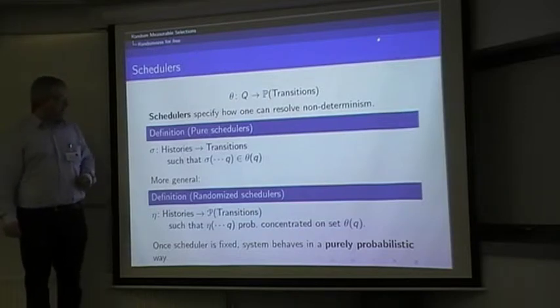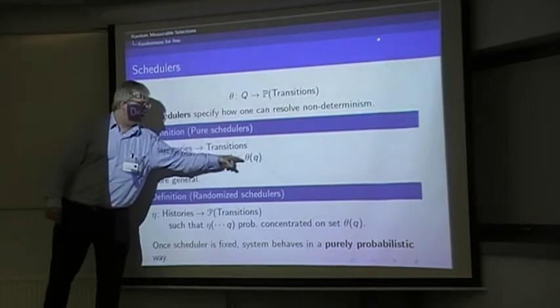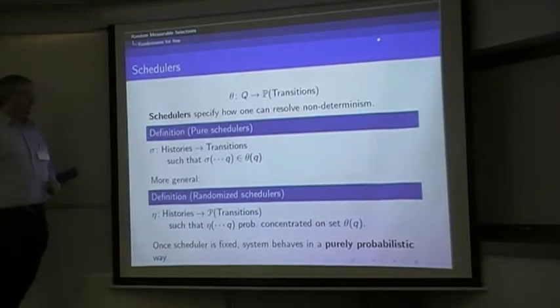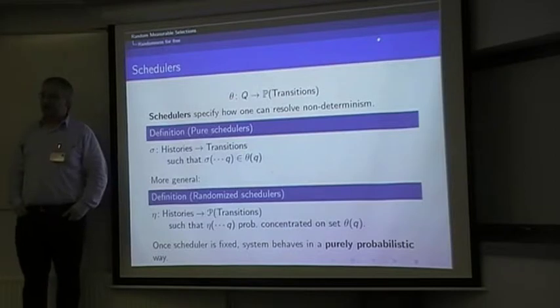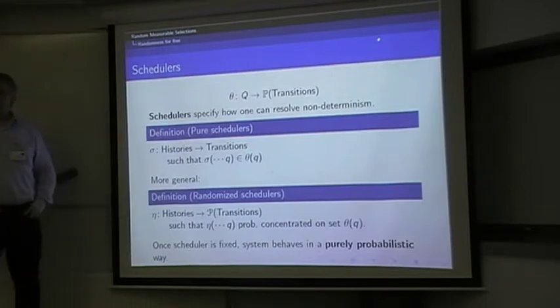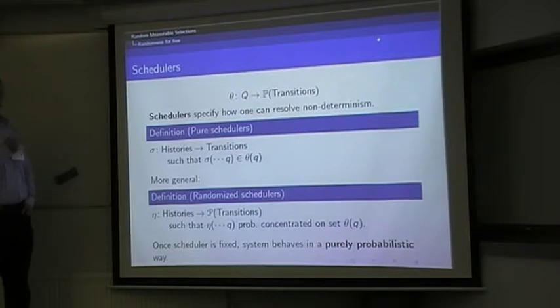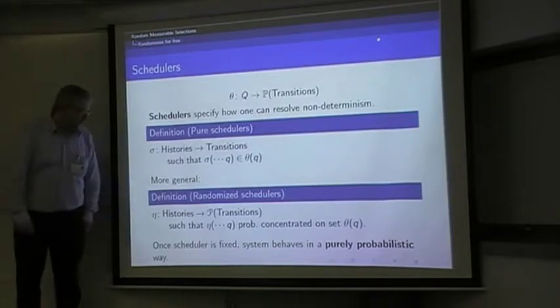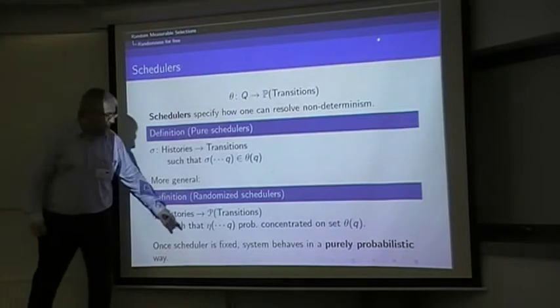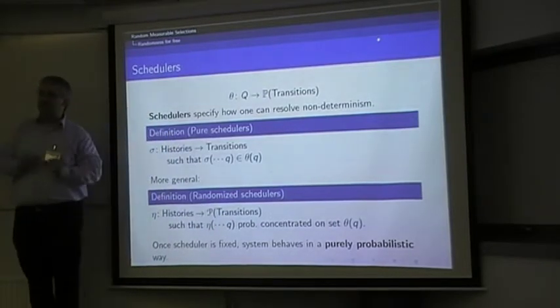In general, you take the history of the computation, so the complete trace of actions and states you've seen so far, and you insist that it picks one of the transitions. Formally, in Greek, it must pick an element of a set of allowed transitions theta of Q. In general, you need to do anything mathematically sensible to use randomized schedulers, or just schedulers. Instead of picking one transition, you'll draw one at random.